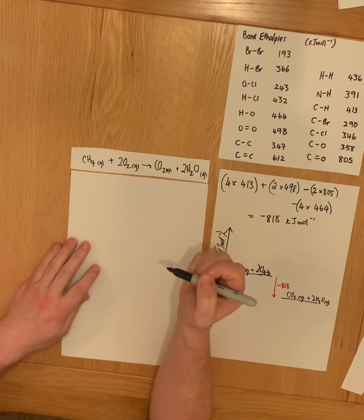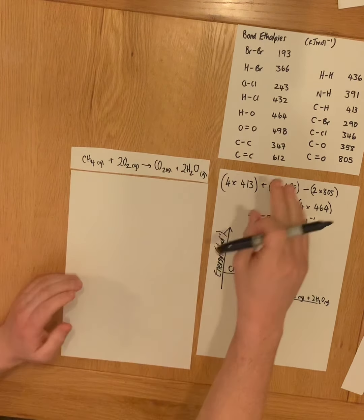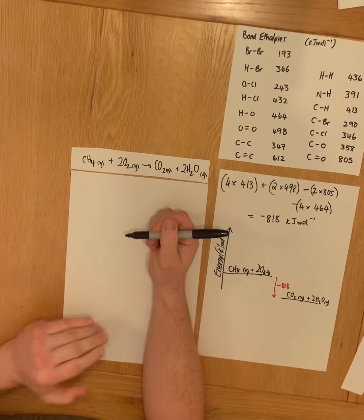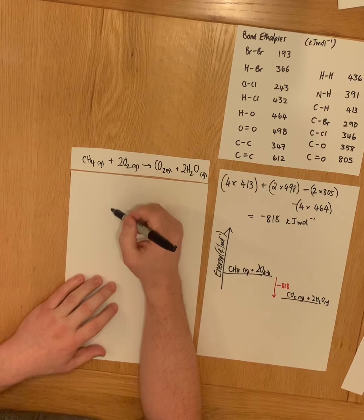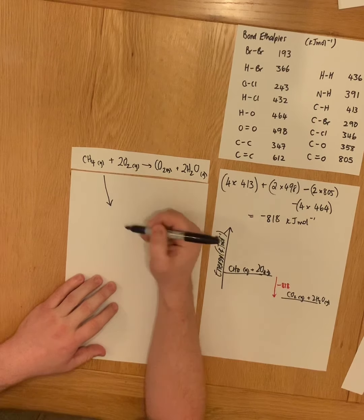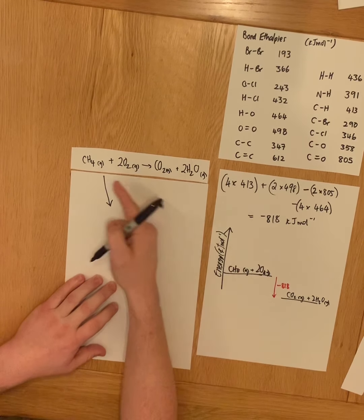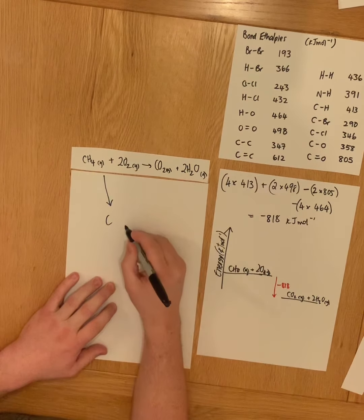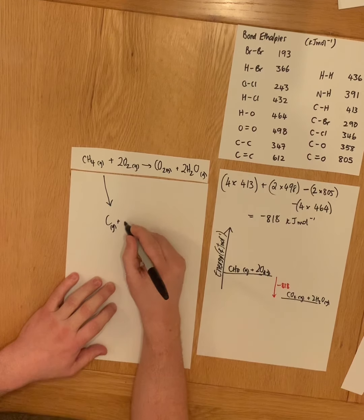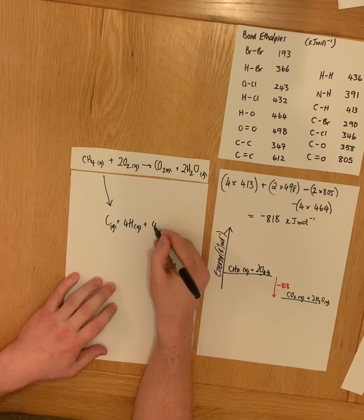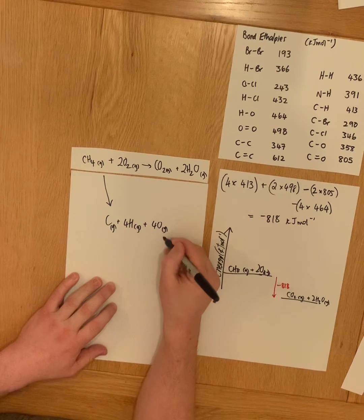Bond energy is the definition of breaking one mole of bonds in the gas phase under standard conditions. So I could break all of those reactants, the bonds in the reactants, to give me my atoms. My atoms will all be in the gas phase. And there they are.